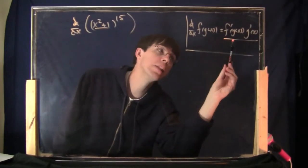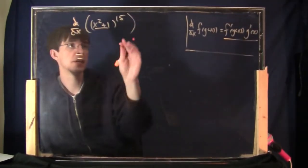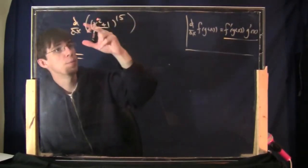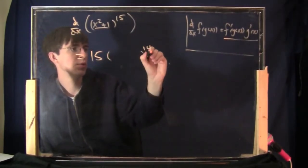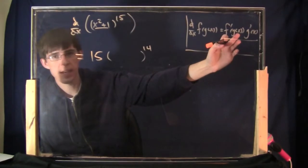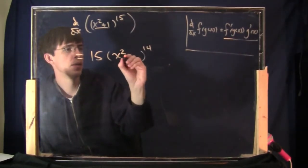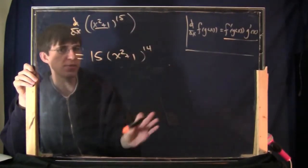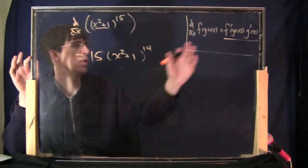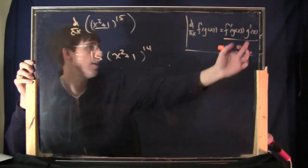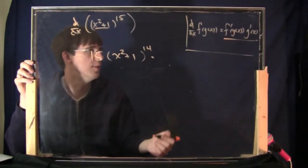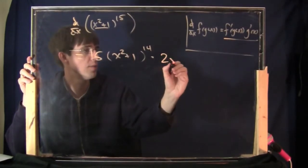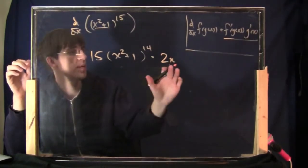You take the derivative of the outer part and leave the same inner part. You do the derivative of the 15th power thing — how do you do the derivative of a 15th power? You bring the 15 out front and change it to a 14th power, with the same inside. It's a pretty common mistake — people will try to take the derivative on the inside also. Don't do that. The chain rule says you take the derivative on the outside, leave the same thing on the inside, and then separately multiply by G prime of x — the derivative of the inside. The inside is x squared plus 1, so the derivative of that is 2x. This is the derivative.